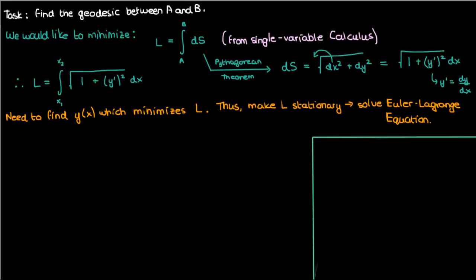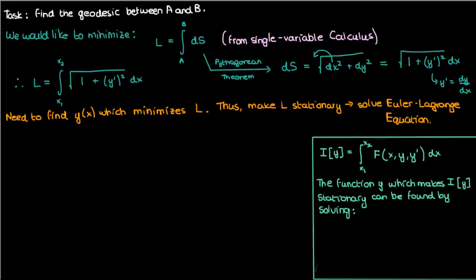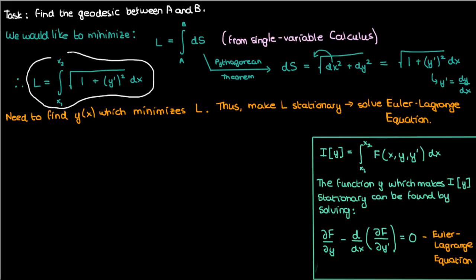So let's remind ourselves of the Euler-Lagrange equation. Recall that if I had this functional I which involved an integral from x1 to x2 of some capital F of x, y, and y prime, then the function y which makes the functional I stationary can be found by this differential equation, which is also called the Euler-Lagrange equation.